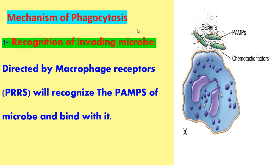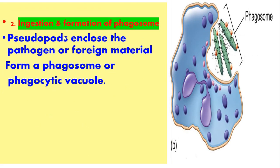Mechanism of phagocytosis, as we see in the figure. Number one: recognition of the invading microbe, directed by macrophage receptor PRRs which recognize the PAMPs of microbes and bind with it, as in this picture. Number two: ingestion and formation of phagosome. The cell engulfs the pathogen or foreign material to form a phagosome, also called a phagocytic vacuole.